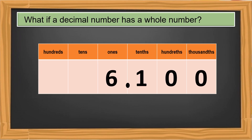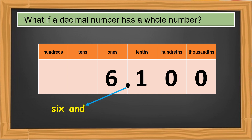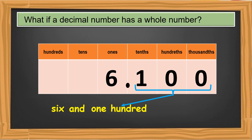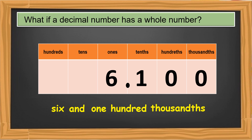What if a decimal number has a whole number? Write the whole number part, write 'and' for the decimal point, then write the number on the decimal part, and don't forget to write the place value of the last digit. This number reads as six and one-hundred-thousandths.